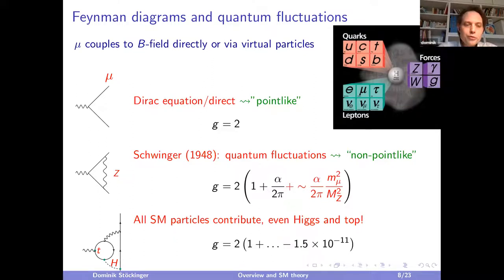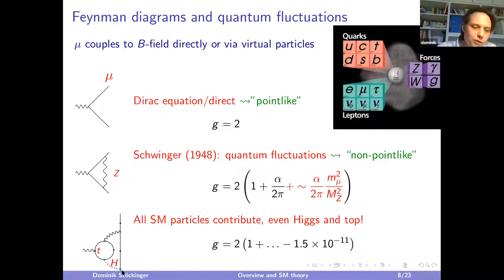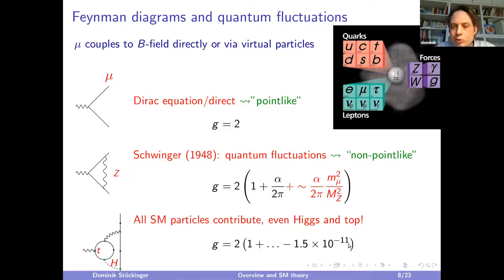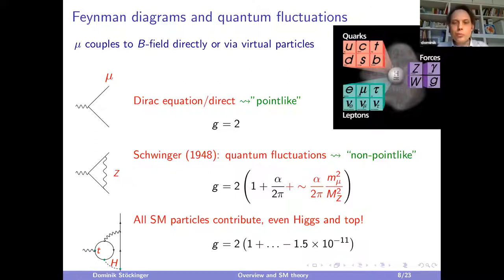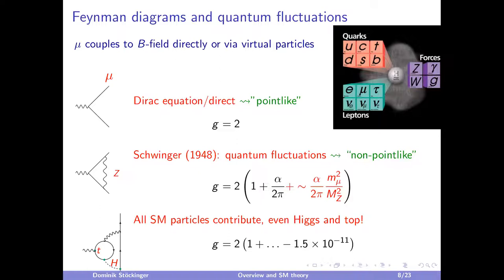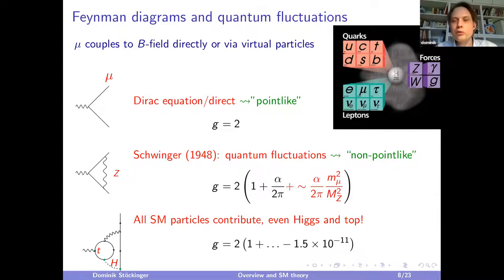A special class of Barr-Zee diagrams contains the two heaviest known particles — the Higgs and top quark — where the Higgs couples to a top loop, effectively a Higgs-to-γγ sub-diagram contributing to g-2 at the level of 10^-11. This is not yet fully resolved experimentally, but the Higgs and top individually contribute more. Again, all standard model particles contribute in a relevant way to a_μ.